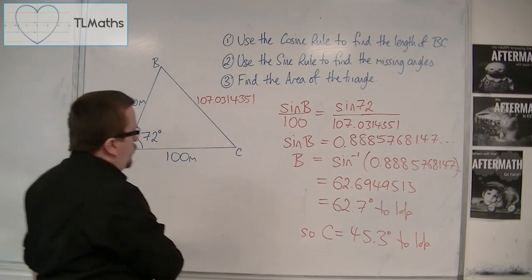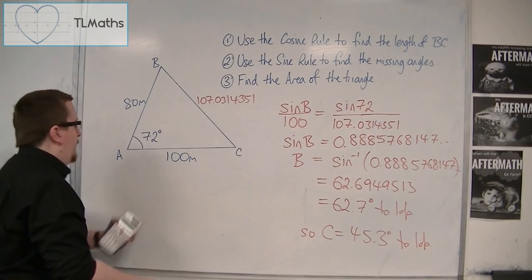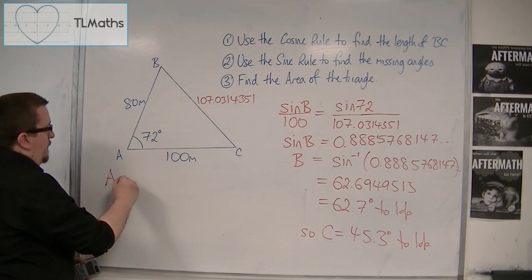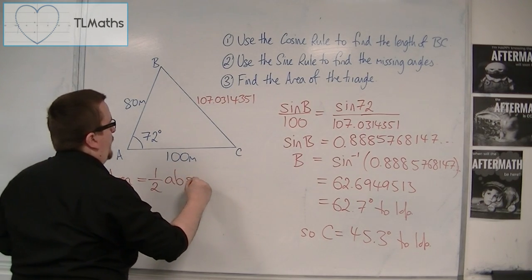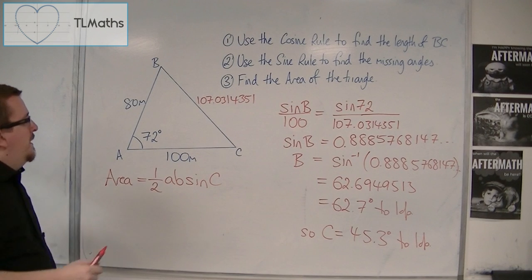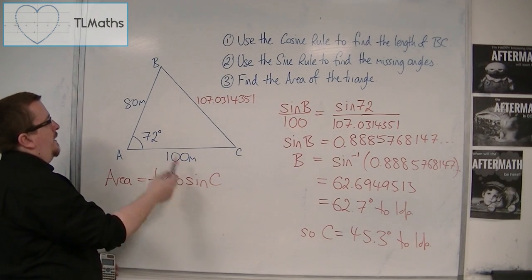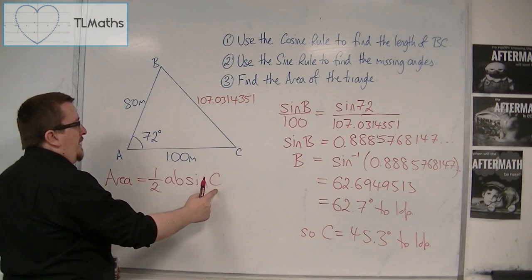So, the area of a triangle, of any triangle, is given by 1 half a b sine c. OK?